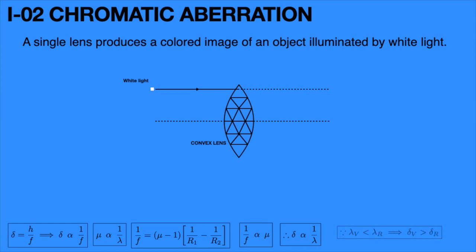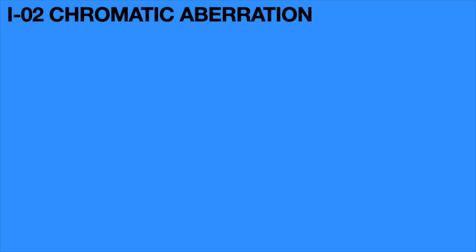Therefore, the split violet light ray forms an image at fv on the principal axis, and the split red light ray forms an image at fr on the principal axis. The remaining colors form images in between violet and red images. Here, fr is greater than fv. Hence, the chromatic aberration for the convex lens, capital ΔF, equals fr minus fv, which is always positive. The important formula is: lambda_v less than lambda_r implies delta_v greater than delta_r.